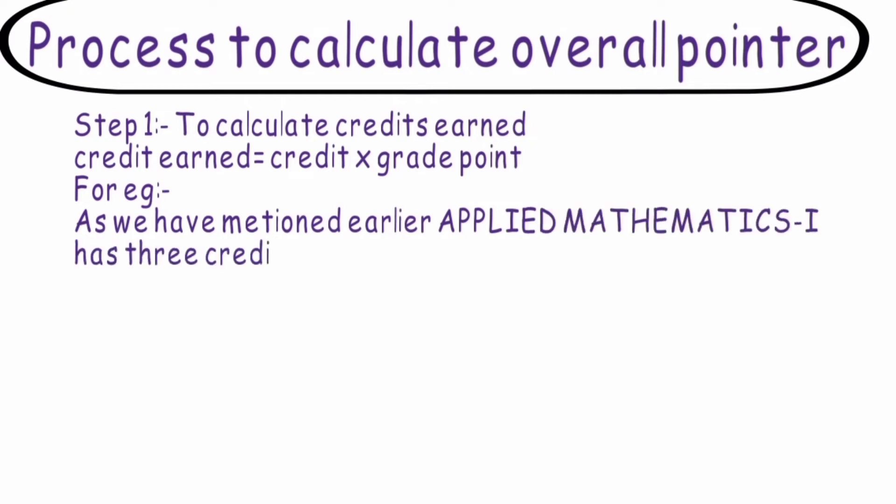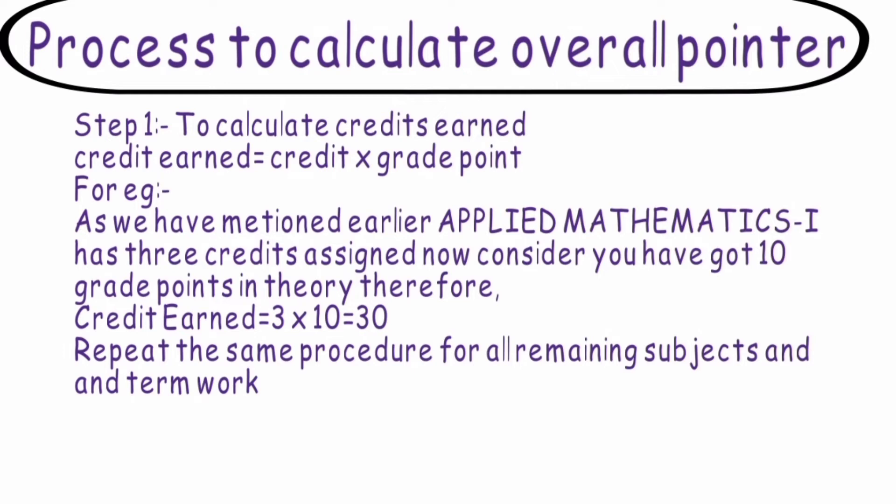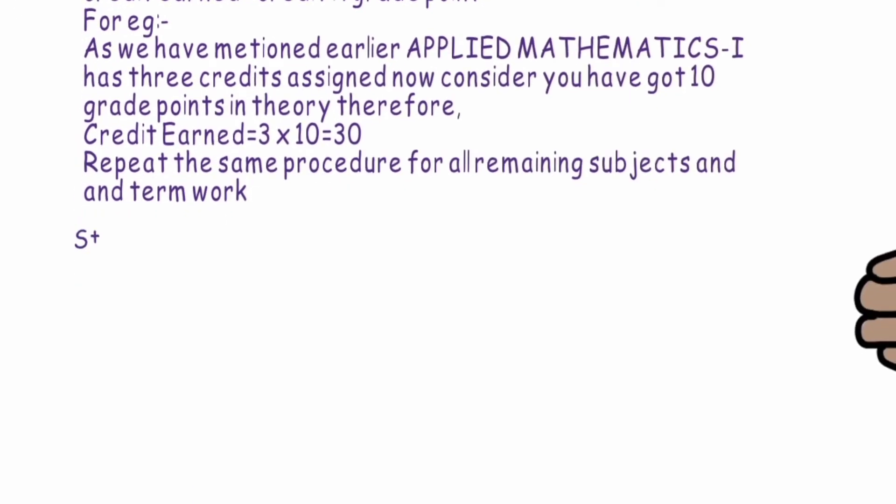As we have mentioned earlier, Applied Mathematics 1 has 3 credits assigned for theory. Consider you have got 10 grade points in theory. So the credits earned will be 3 into 10, that's 30 for the theory. Repeat the same procedure for term work and all other subjects. Step 2 is calculating final pointer. Here